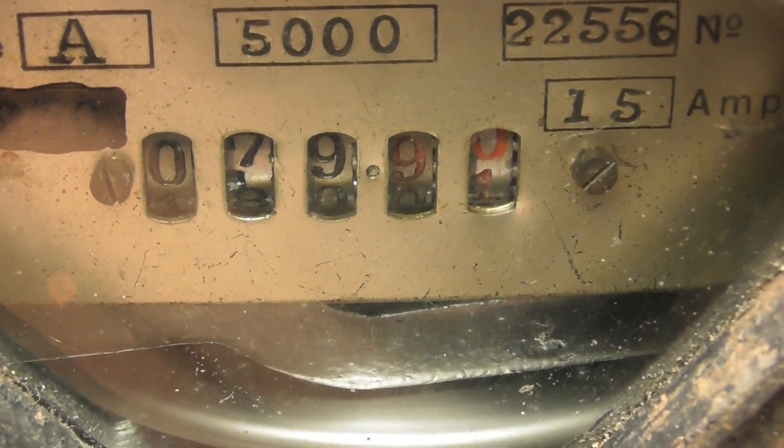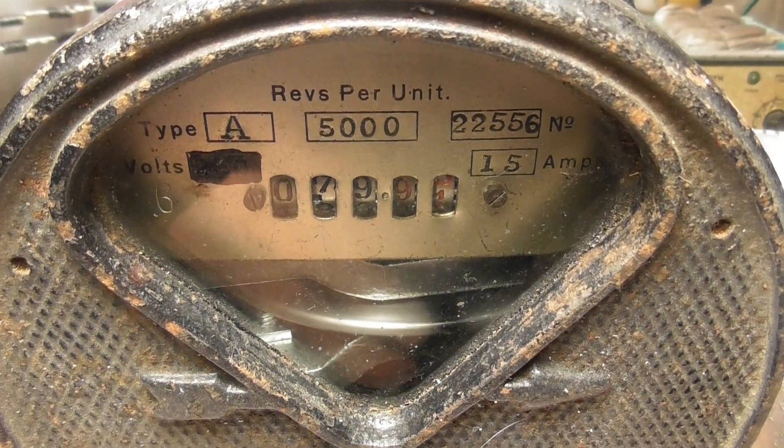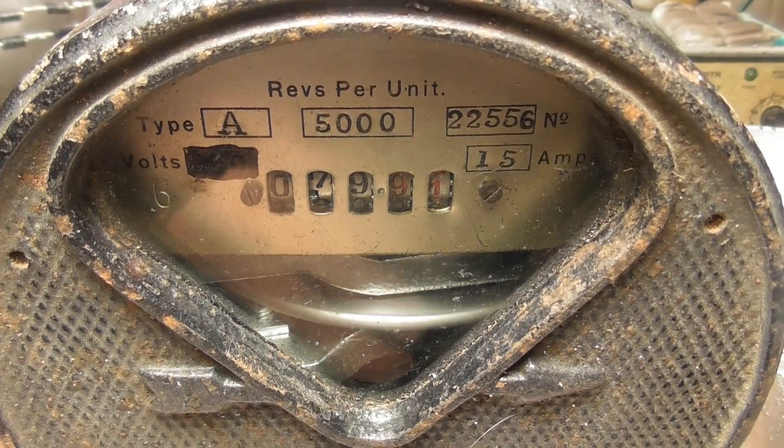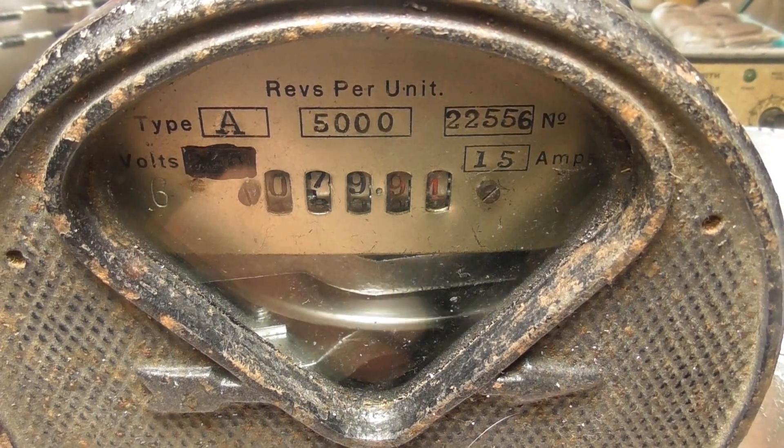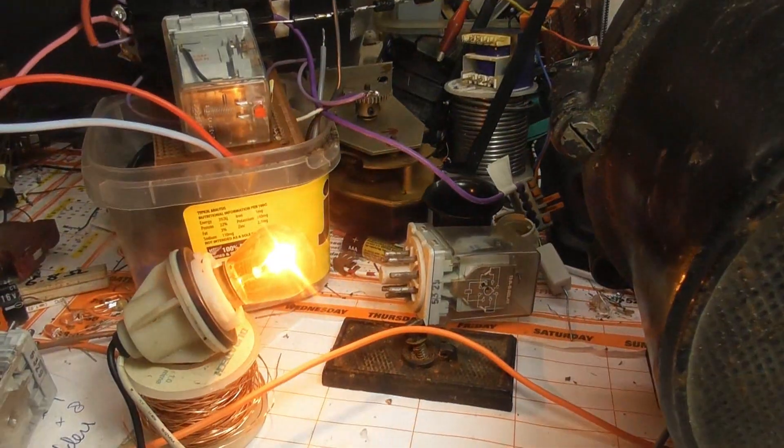This old DC meter, Type A, running on about 10 volts, 1.5 amperes. It's just a load of a small car bulb, an orange car bulb.